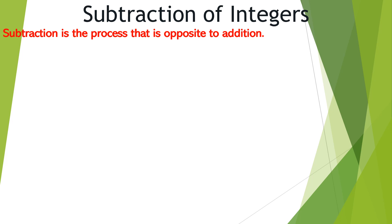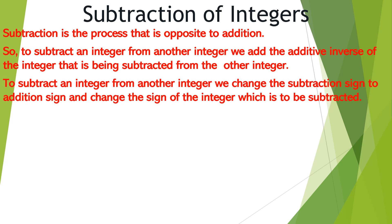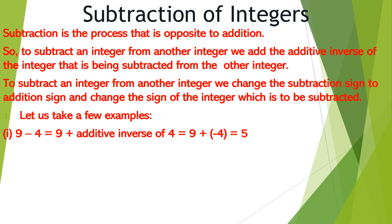Subtraction is the process opposite to addition. To subtract an integer from another integer, we add the additive inverse of the integer being subtracted. We change the subtraction sign to an addition sign and change the sign of the integer which is to be subtracted. Let us take a few examples. For 9 minus 4, we change the minus to plus and take the additive inverse of 4. So this comes out to be 9 plus negative 4, which equals 5.